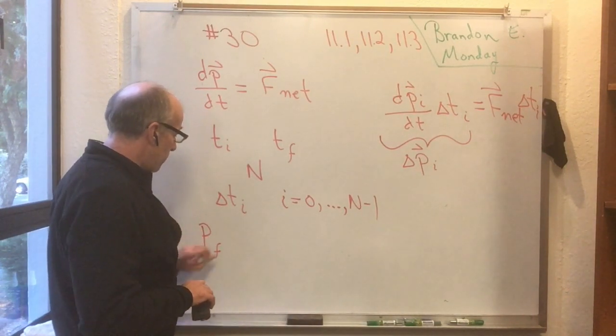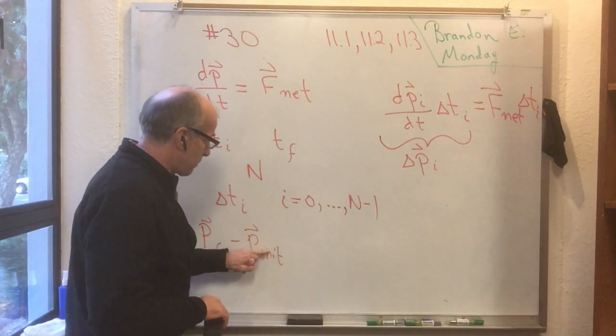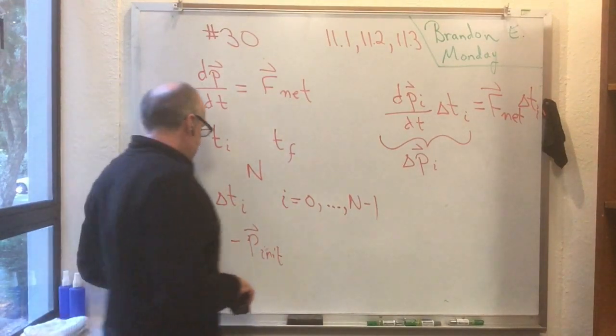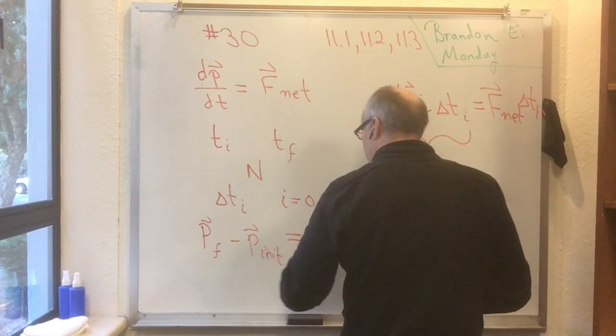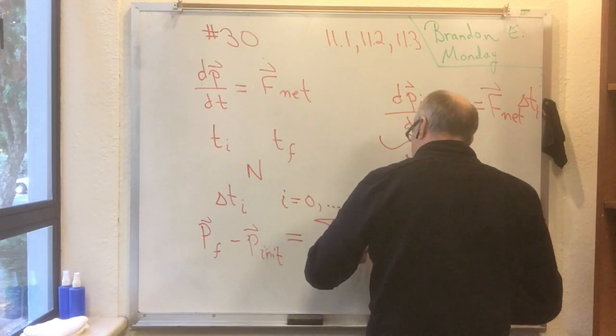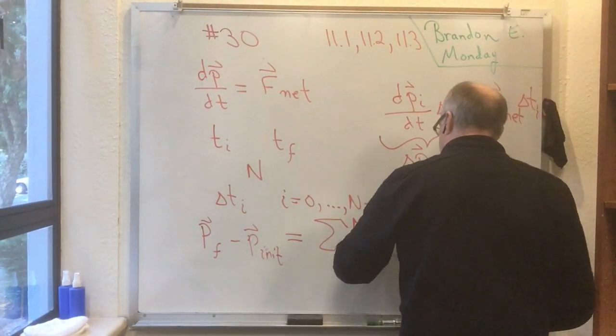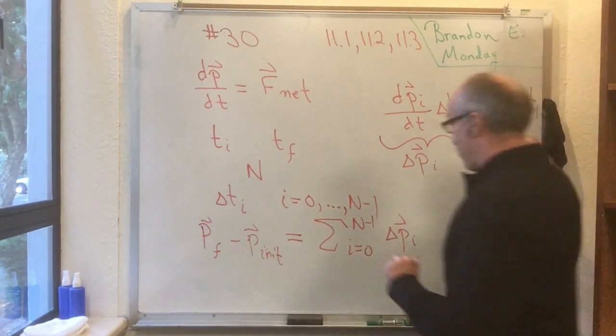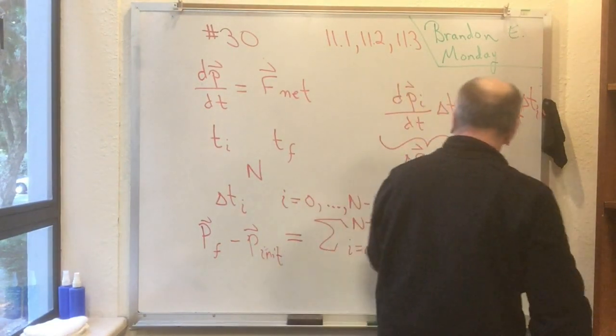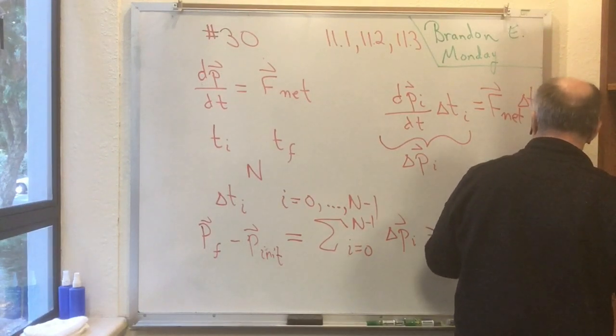So we have this i that's running from 0 to n minus 1, so there's capital N of these little changes. So the total change in p, which is p_final minus p_initial, I better write out i-n-i-t here so you don't think that i has anything to do with that i. P_final minus p_initial is equal to the sum i equals 0 to n minus 1 of all the little delta p sub i's. But all the little delta p sub i's we already have a formula for here. This is the sum i equals 0 to n minus 1 of F_net delta t sub i.